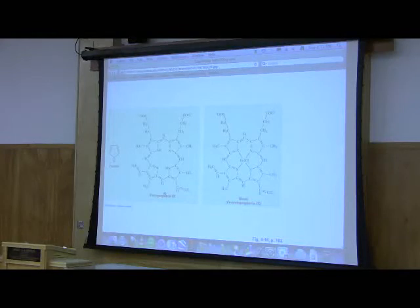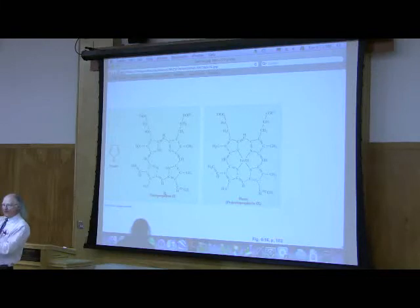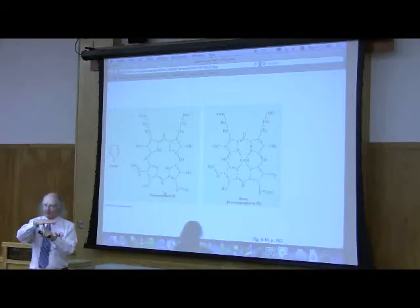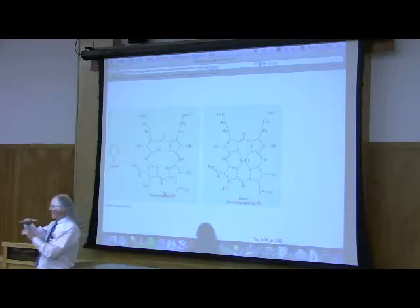So heme, I'm sorry, the iron is held to the heme by four groups of this ring and one group underneath it of the protein. So one of the amino acids is making a link to this iron in this heme group. Everybody picturing that?